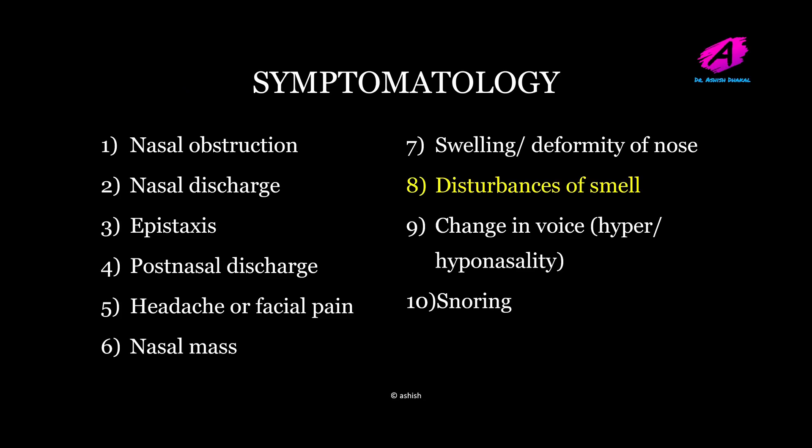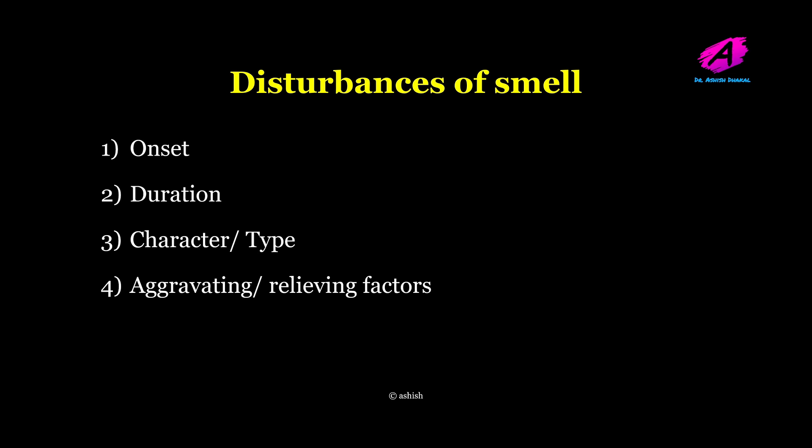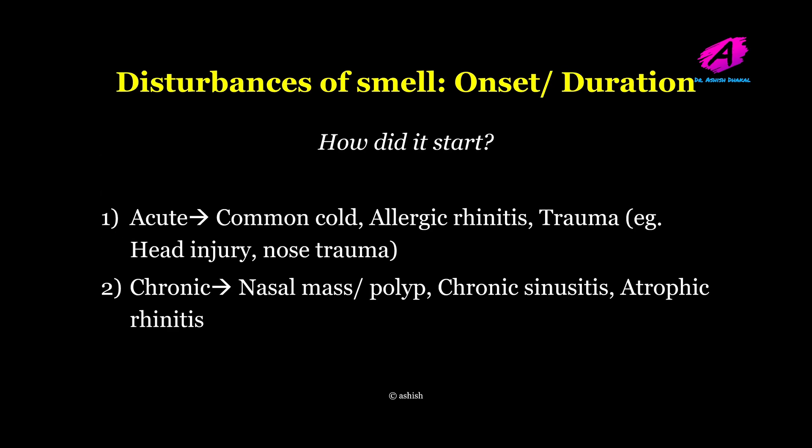The next symptom is disturbance of smell. If a patient complains of disturbance of smell, ask about onset, duration, character or type, and aggravating and relieving factors. Onset and duration may be acute or chronic. Acute disturbance of smell may be due to common cold, allergic rhinitis, or trauma from head injury or nasal trauma. In chronic cases, it may be due to nasal mass, polyps, chronic sinusitis, or atrophic rhinitis.